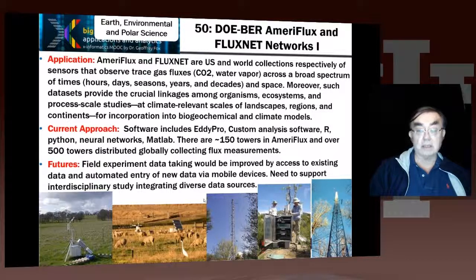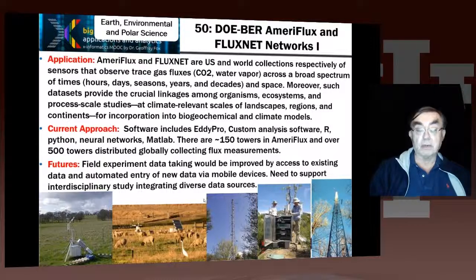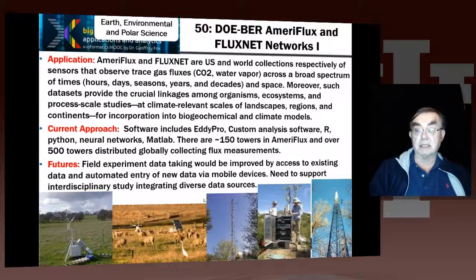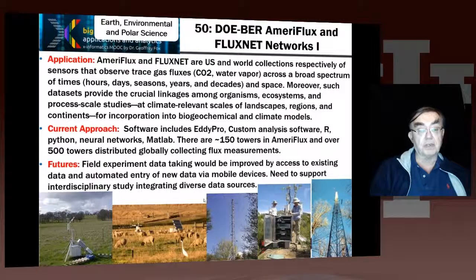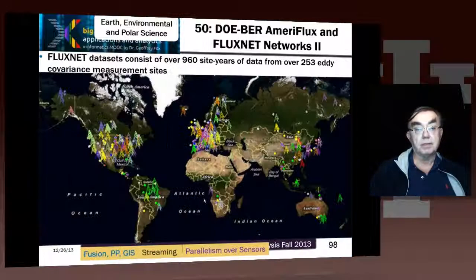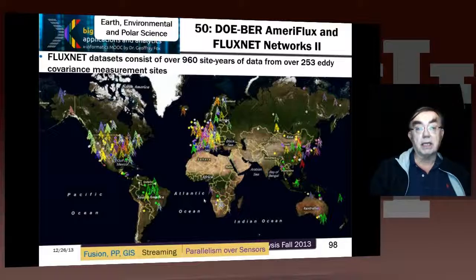There are huge numbers of examples like this. The most common, of course, is the smartphone — there are billions of those, and only 500 of these sensor sites. But the idea is the same: things gathering data, whether it be from Facebook, tweets, or measurements of gas densities and contaminants in the environment. That sensor data needs to be gathered, sent to cloud infrastructure, and analyzed to discover communities or assess the health of the environment. Here is a map of the Fluxnet network, which has 960 site-years of data from 253 measurement sites.